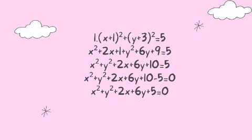Now, combine like terms: x squared plus 2x plus y squared plus 6y plus 10 equals 5. Let us rearrange our equation: x squared plus y squared plus 2x plus 6y plus 10. In our general form, it is equated to 0, so we need to subtract 5 and set it equal to 0. Combining: x squared plus y squared plus 2x plus 6y plus 5 equals 0.